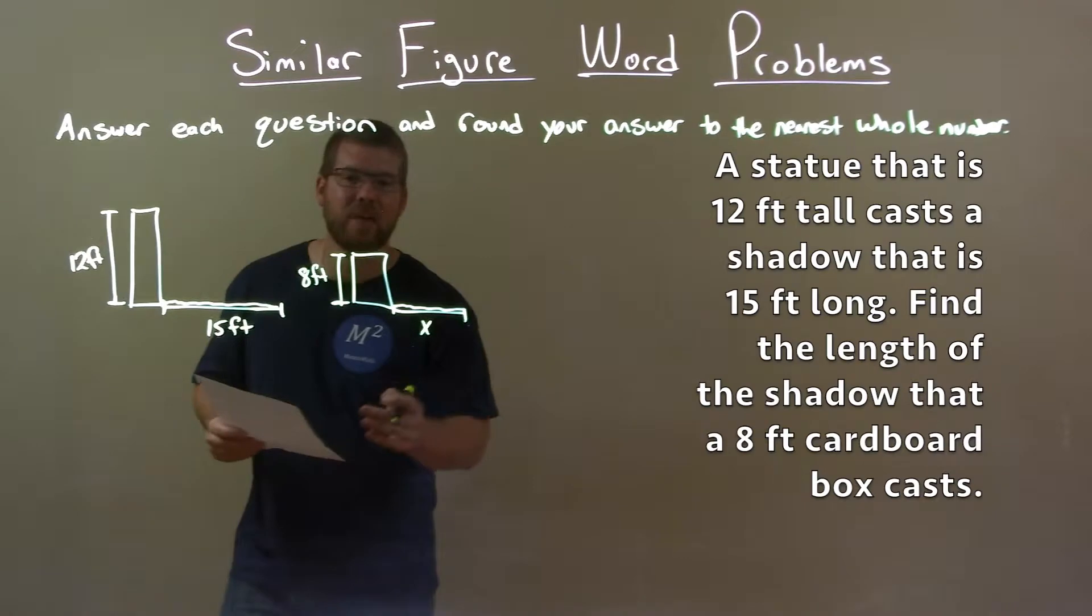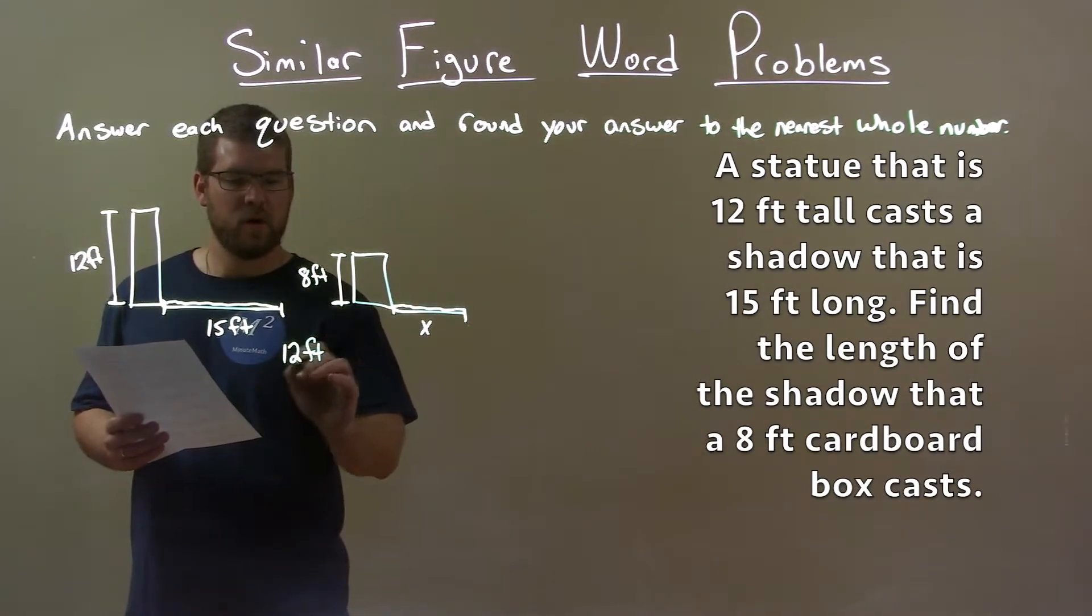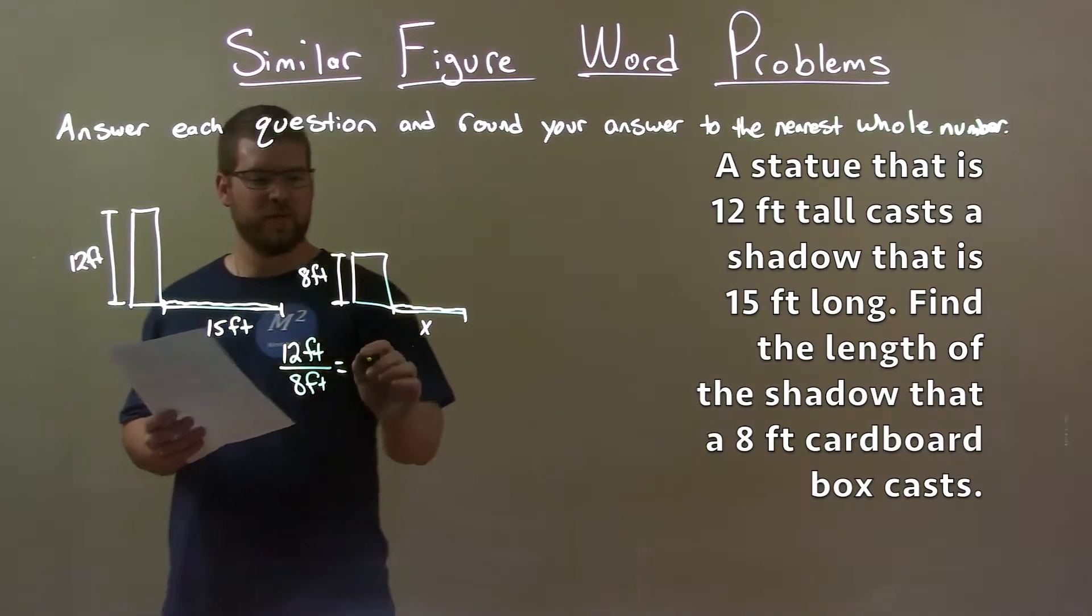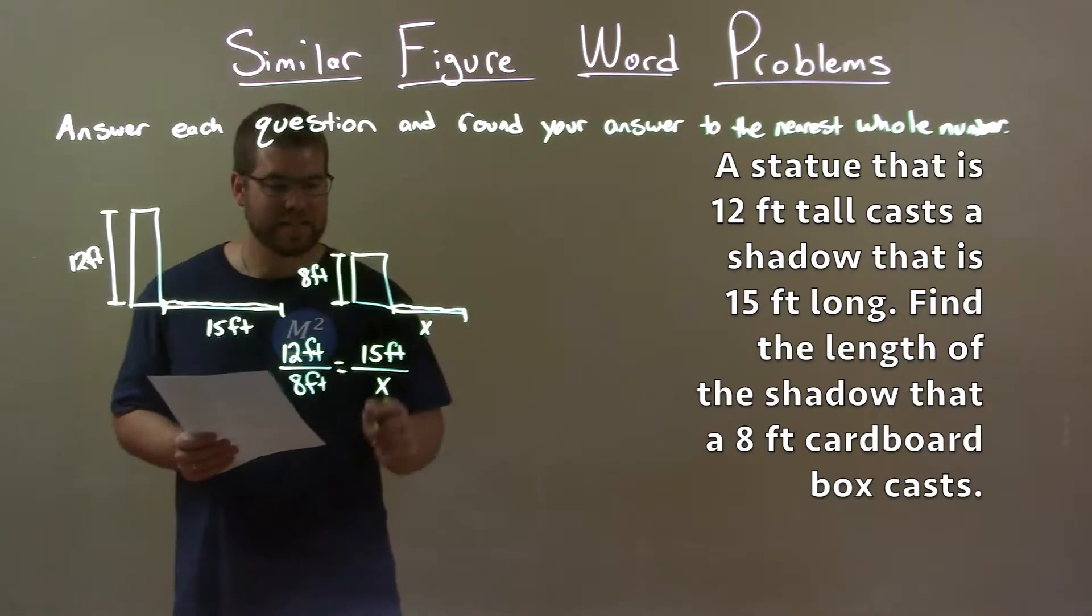So we can set up a proportion. The heights, 12 feet over 8 feet, is equal to 15 feet, the first shadow, over the shadow of our box. Now, with that information, let's solve for x.